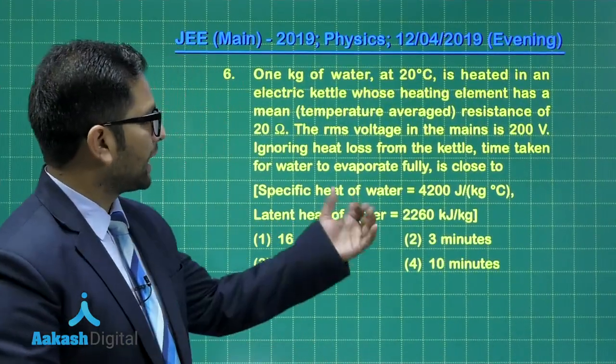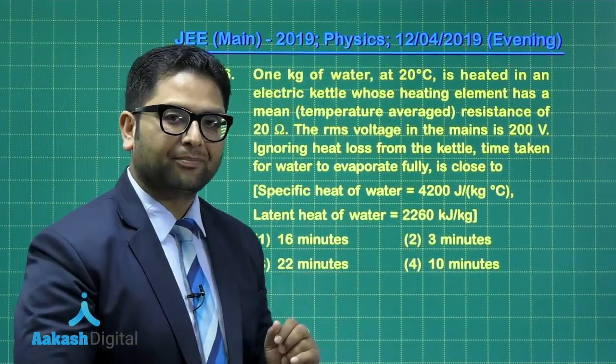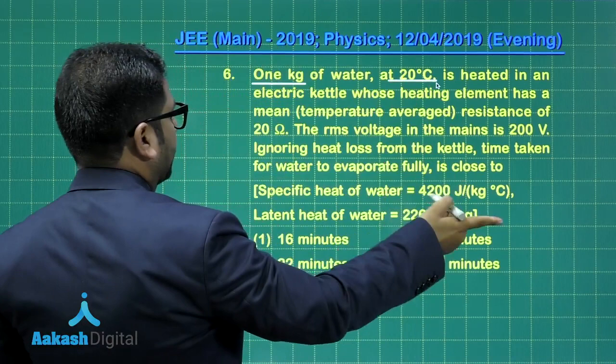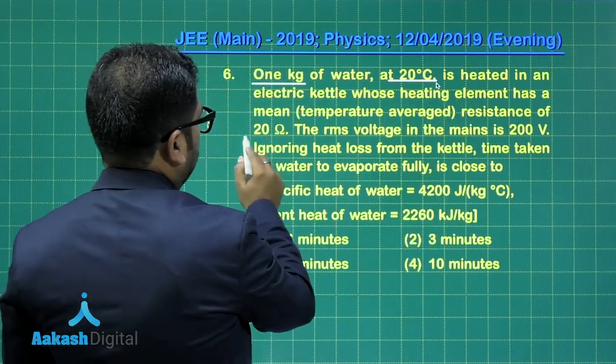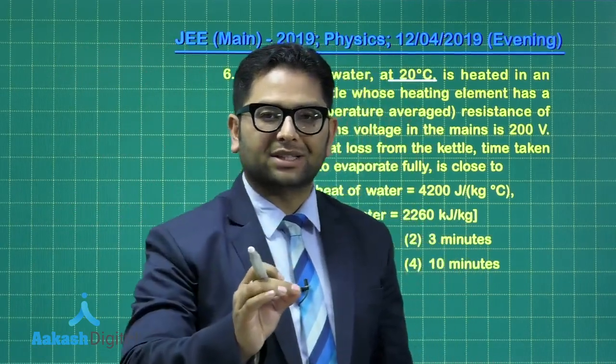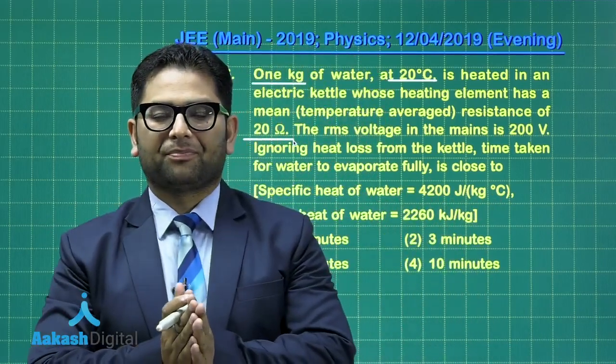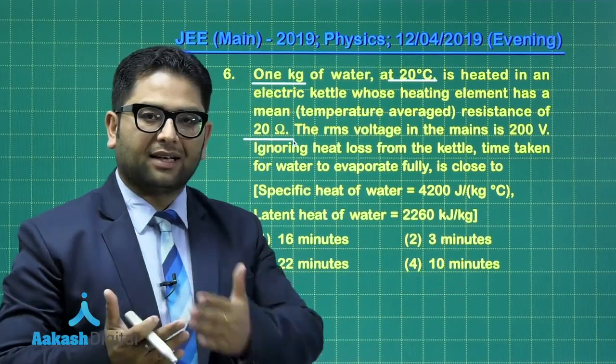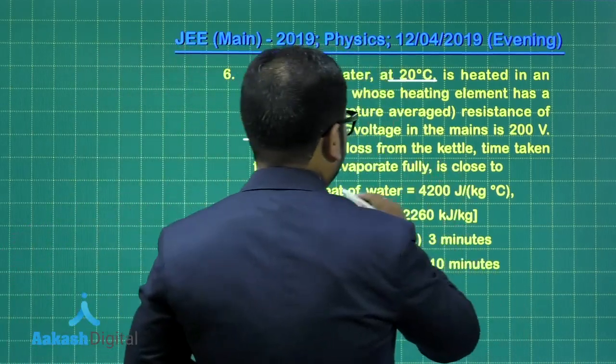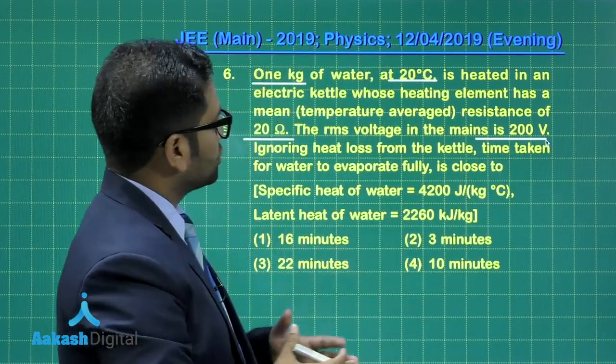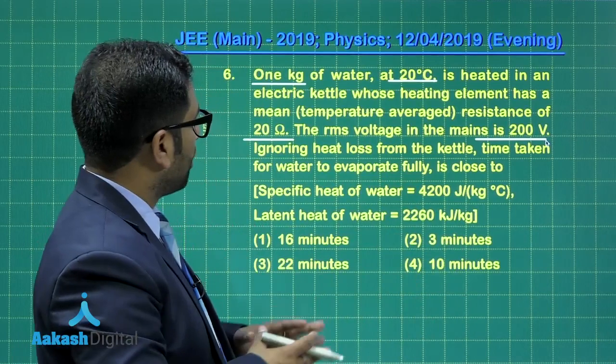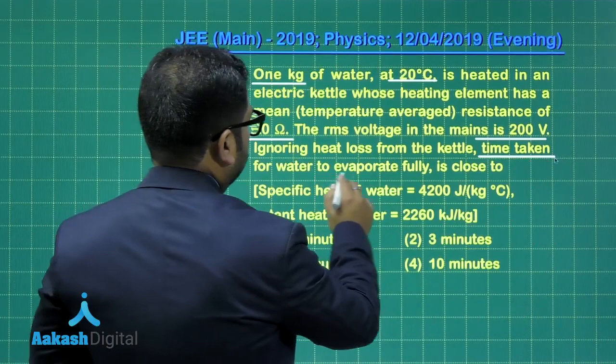Question number six has been taken from calorimetry. A slight amount of twist has been given. One kg of water, the mass, which is at 20 degree, is inside an electric kettle. And the mean resistance of the kettle is 20 ohm. And the mean has been said temperature average. So this is all to simplify the calculation because we know with temperature the value of resistance changes. But here, it's a convenience given to us that the entire variation may be neglected and a mean value may be taken. So that's all the advantages we have. And this has been connected to RMS voltage of mains 200 volts. You know, when it comes to heat, we require the RMS and even that is given directly. So no additional preparation is required.